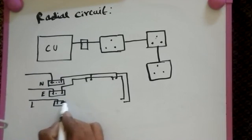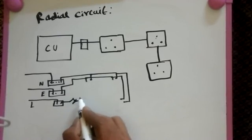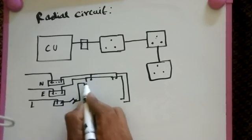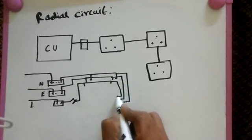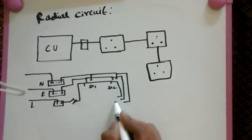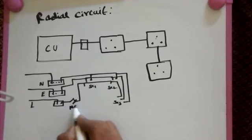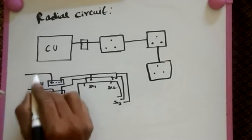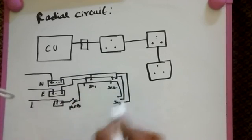Here we install an MCB breaker around here on the face, then it comes like this. This is for radial connections.